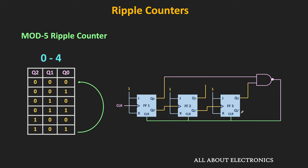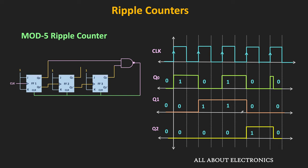Let us also see the same thing in the timing diagram. Starting from 000, the counter will start counting up to 100. Then momentarily the count will go to 101. As soon as the count goes to 101, the NAND gate will generate the clear signal and reset the counter to 000. This reset time depends on the propagation delay of the NAND gate. Now let me also show you the same thing in the simulation.